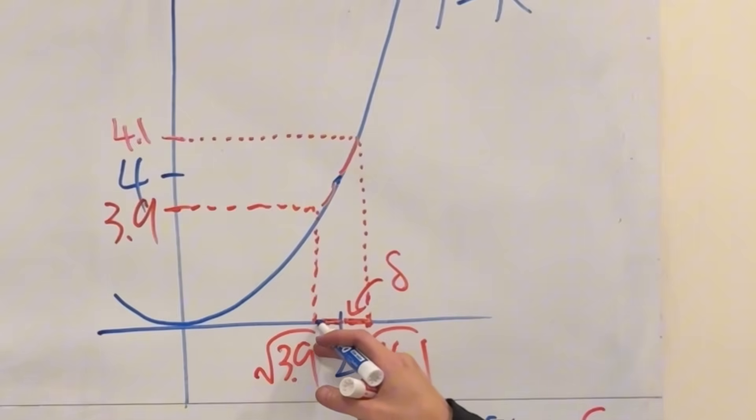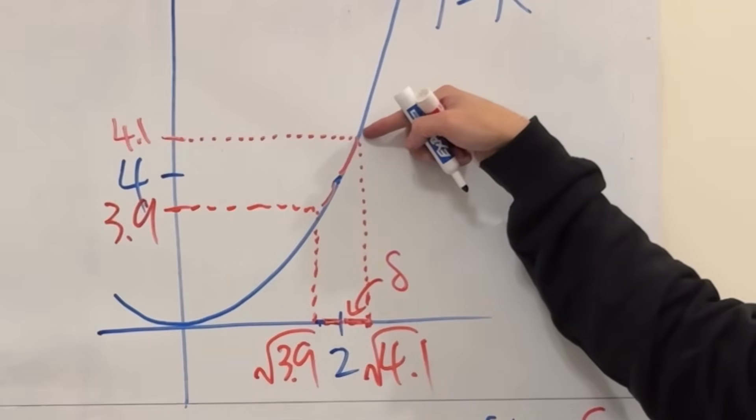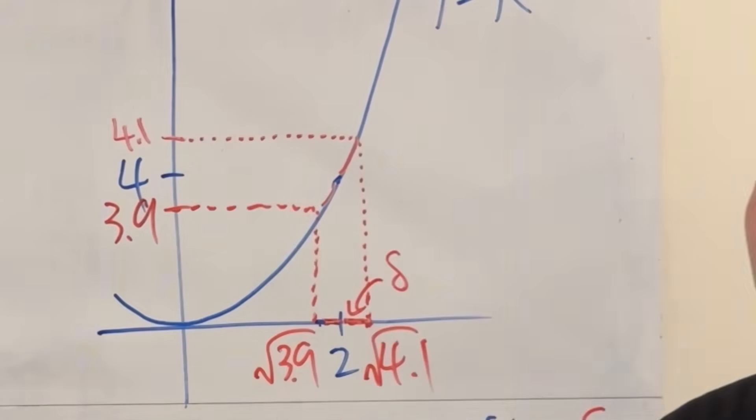So if you happen to pick the x right here in this little tiny bit, when you move to the right you went out of the region. If you go up, this y value is going to be more than 0.1 away from the 4.